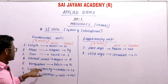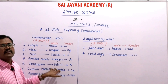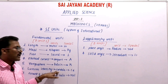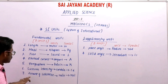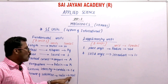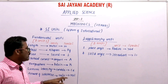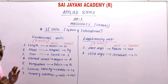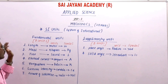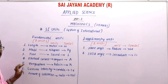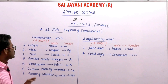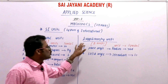The sixth quantity is luminous intensity. The SI unit of luminous intensity is candela, represented by the symbol capital 'C' small 'd' — cd. The seventh quantity is amount of substance. The SI unit is mole, represented by 'mol'. So these are the seven fundamental units in the SI system.